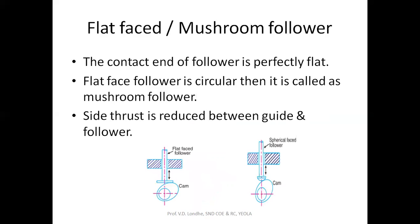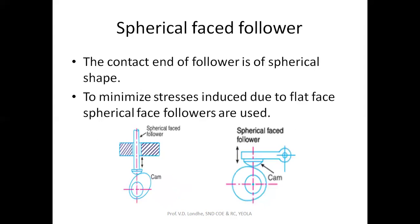Next is the FLAT FACE or MUSHROOM FOLLOWER. The contact end of this FOLLOWER is flat, and this flat surface is in contact with the CAM. The CAM is rotating and the FOLLOWER oscillates or reciprocates in the guideway. If the flat face is replaced by a spherical shape, it is called the MUSHROOM FOLLOWER. The positive point is that the side thrust generated with the KNIFE EDGE FOLLOWER is reduced. The SPHERICAL FACE FOLLOWER has a spherical end surface, which minimizes the stresses induced by the flat face.